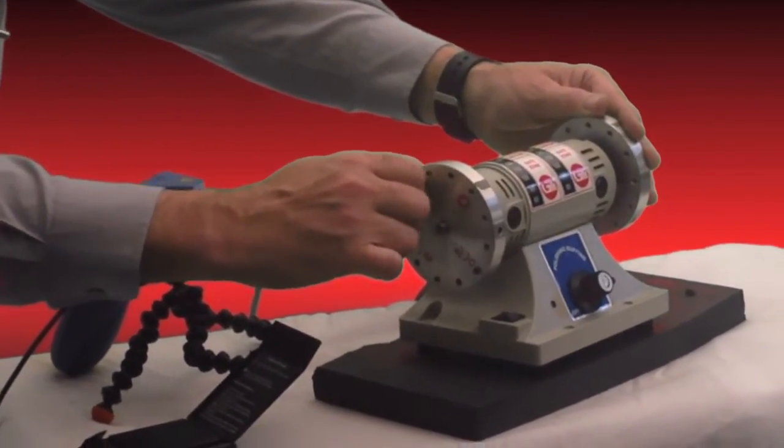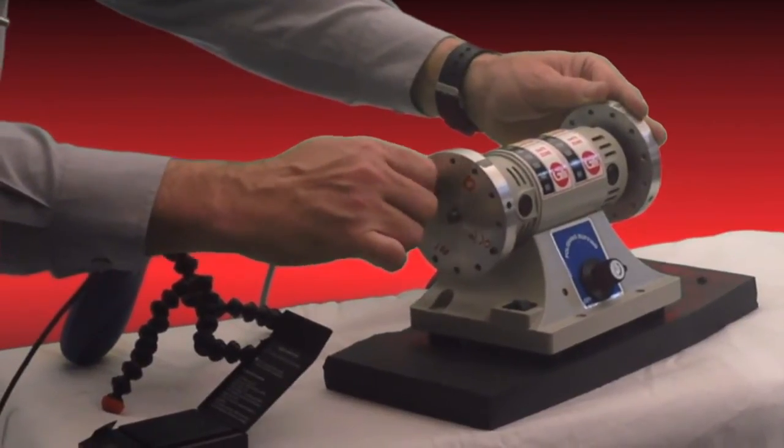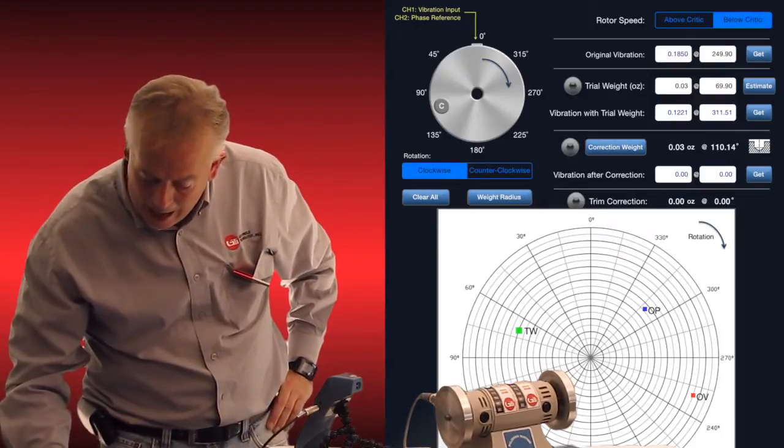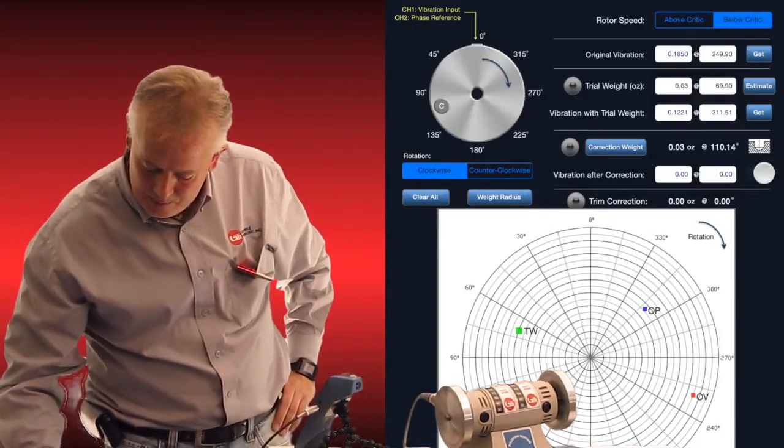So I put the weight as close to 110 degrees as possible. And now I'm going to hit vibration after correction, which is the next prompt down.